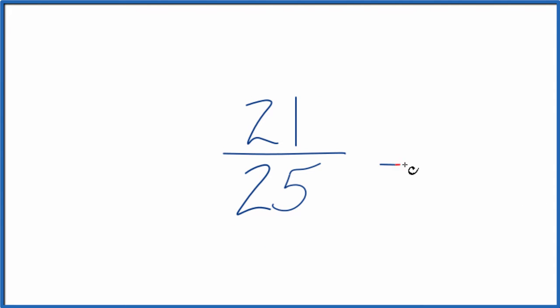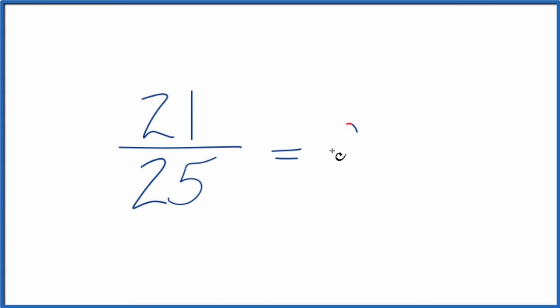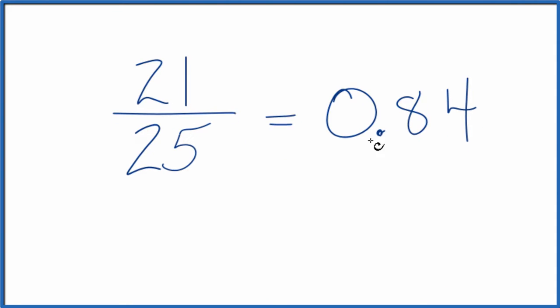One is you can just type this into your calculator. The fraction 21 over 25 equals 0.84. These are equivalent - they're the same value, just represented differently.